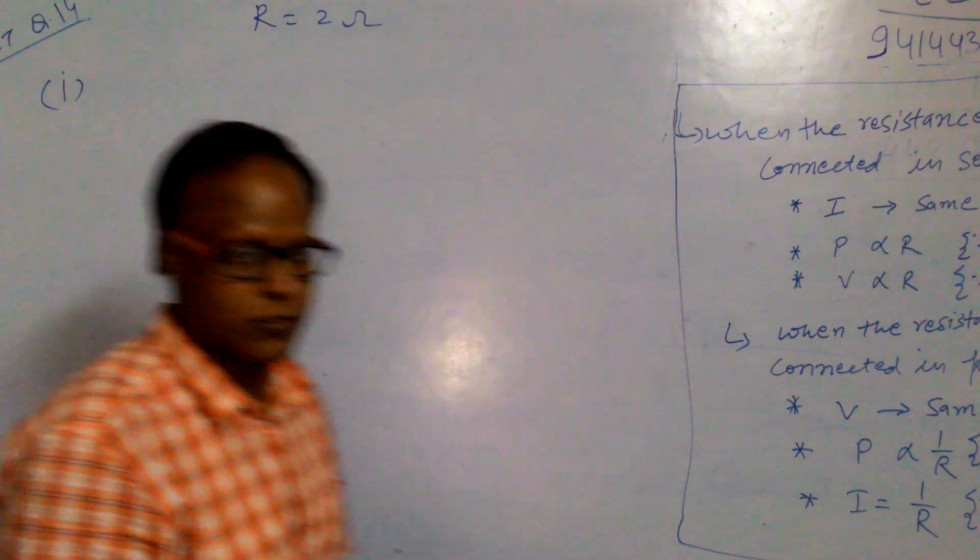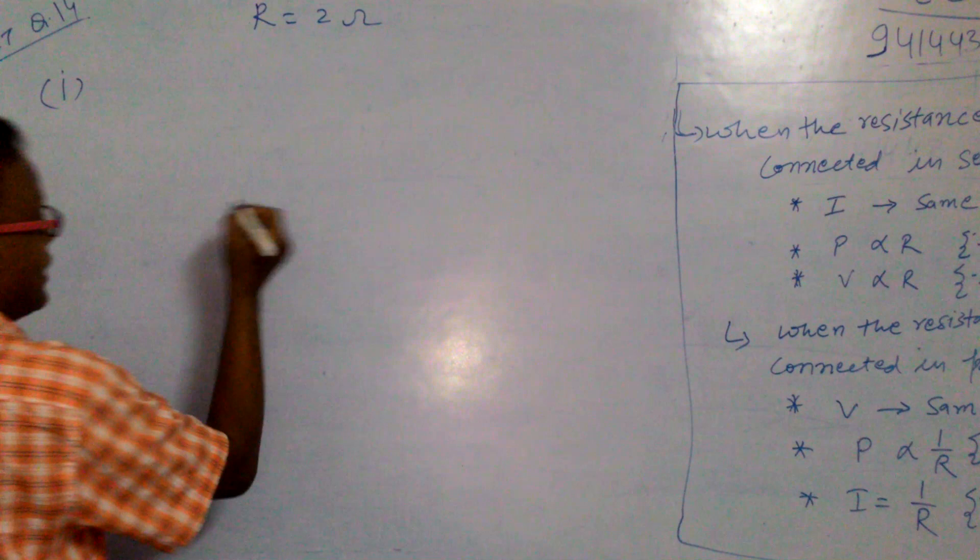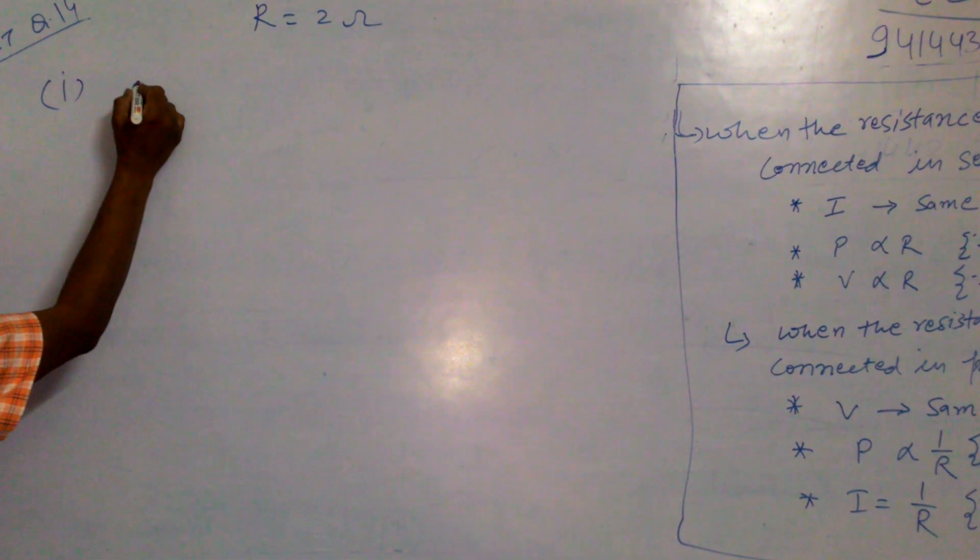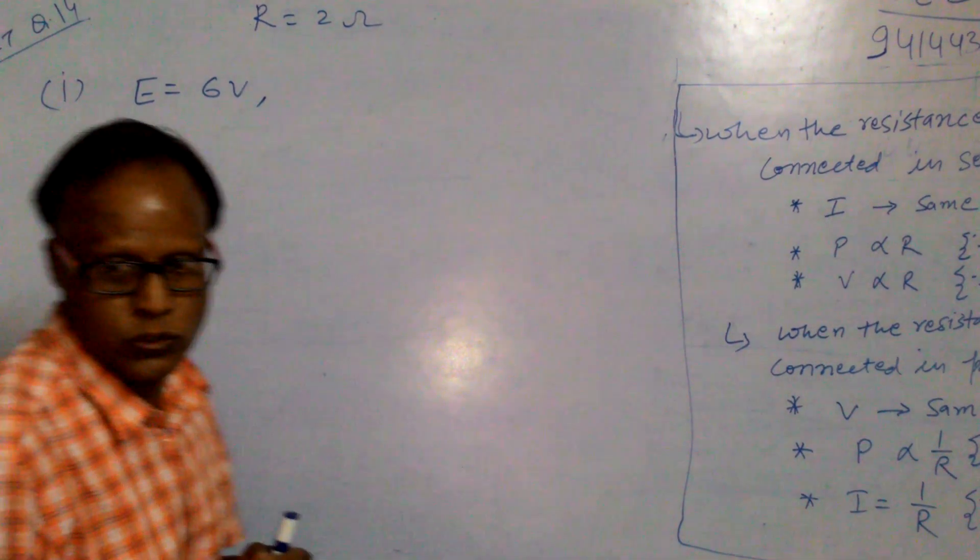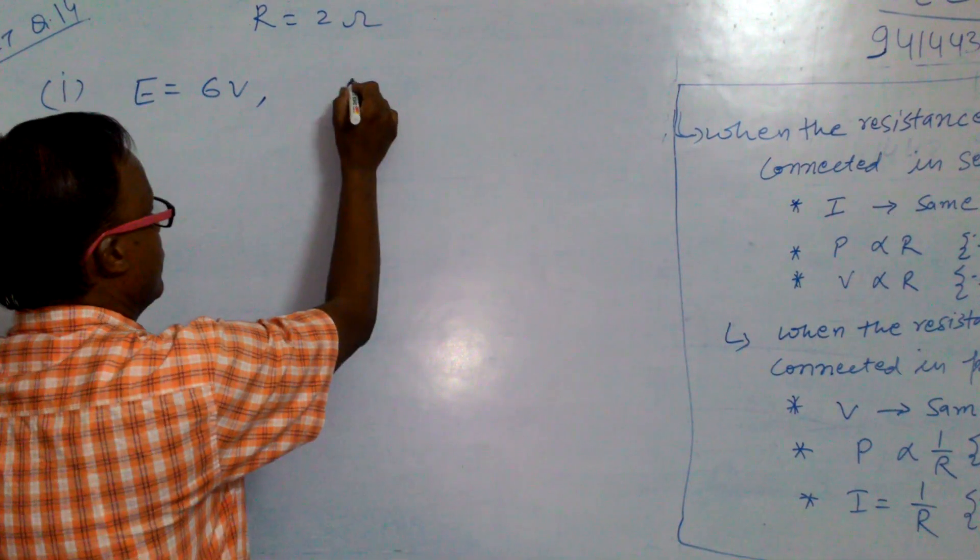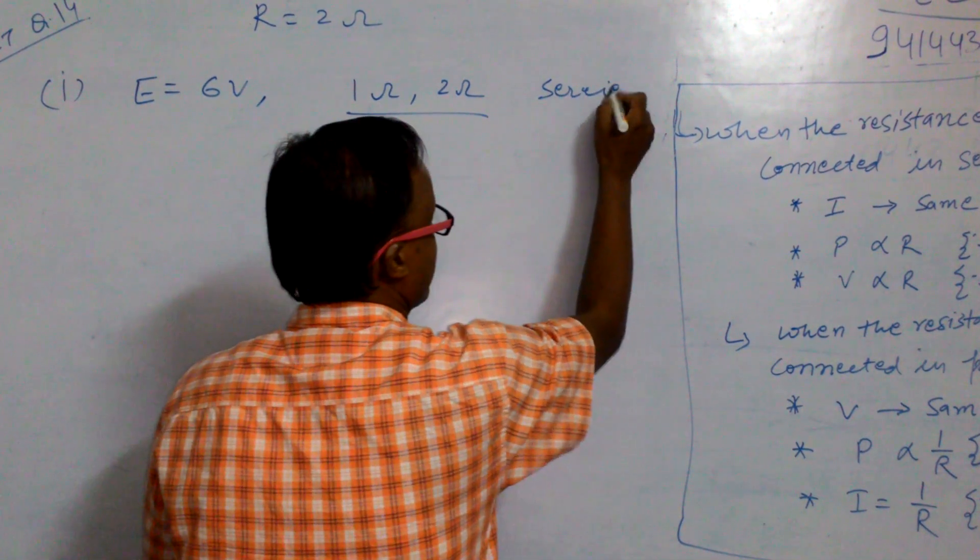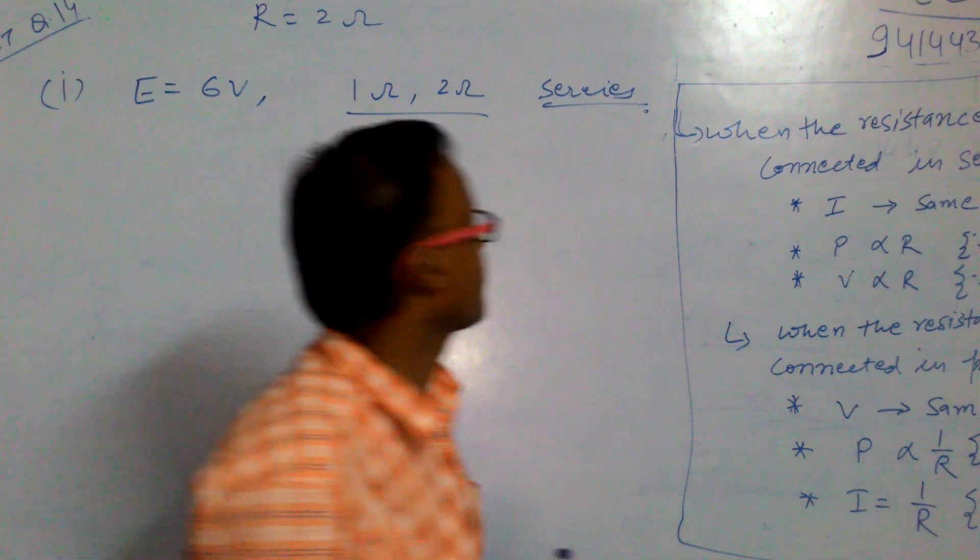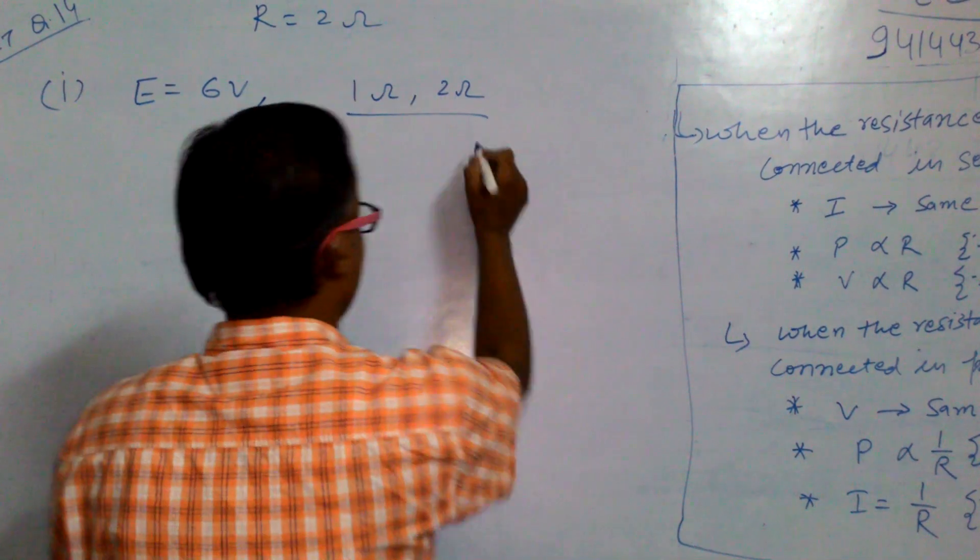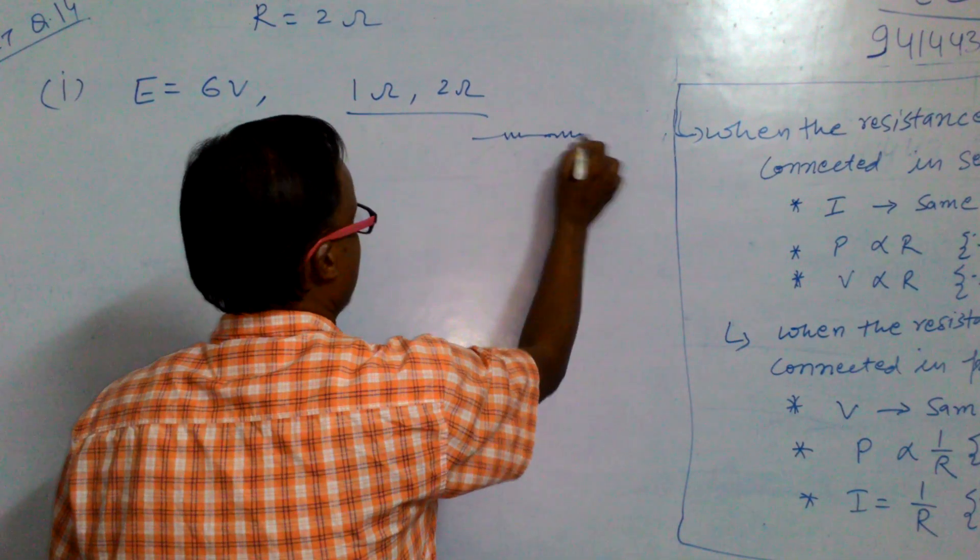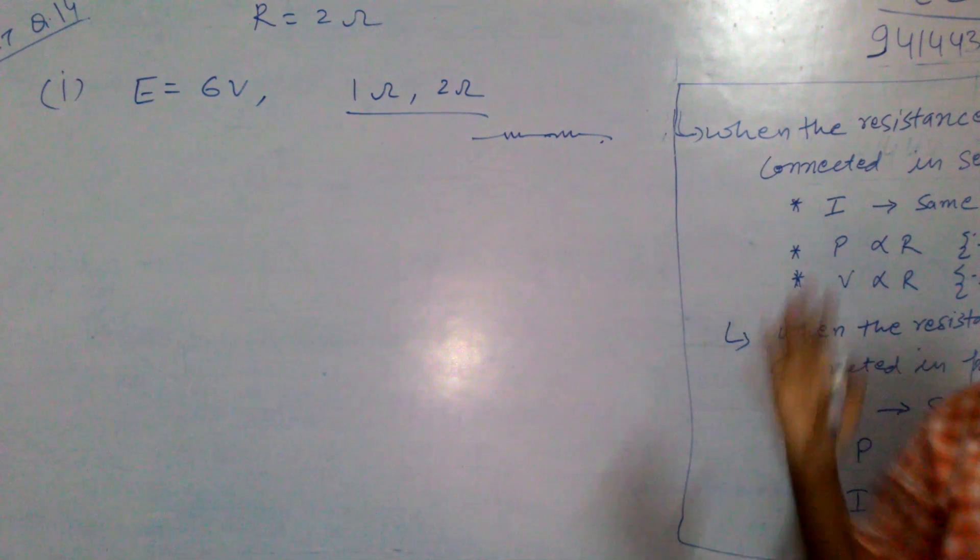6 volt battery in series with 1 ohm and 2 ohm resistors. We connect a battery of EMF 6 volt with 1 ohm resistor and 2 ohm resistor. They are in series. We can draw 1 ohm resistor then another resistor connected in series with this source. If resistors are connected in series, what is the effective resistance?